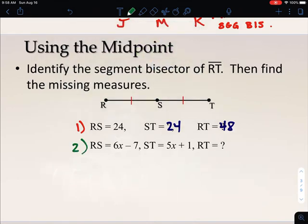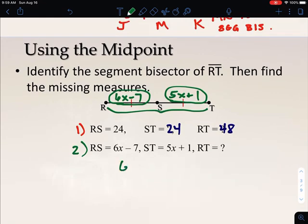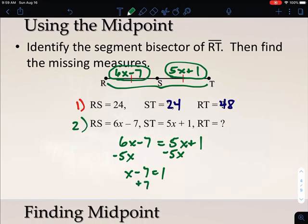In the second example, they give us a little bit different information. We don't have actual numbers as much as expressions. They're telling me RS has a length of 6X minus 7. ST has a length of 5X plus 1. They want us to find the entire length from R to T. What we have to pay attention to is knowing S is a midpoint. That means this 6X minus 7 and this 5X plus 1 have to be the same. So I can take 6X minus 7 and set it equal to 5X plus 1. Now we have an equation that we can solve for X. We subtract 5X from both sides, we get X minus 7 equals 1. We can add the 7 to both sides, and we get X equals 8.